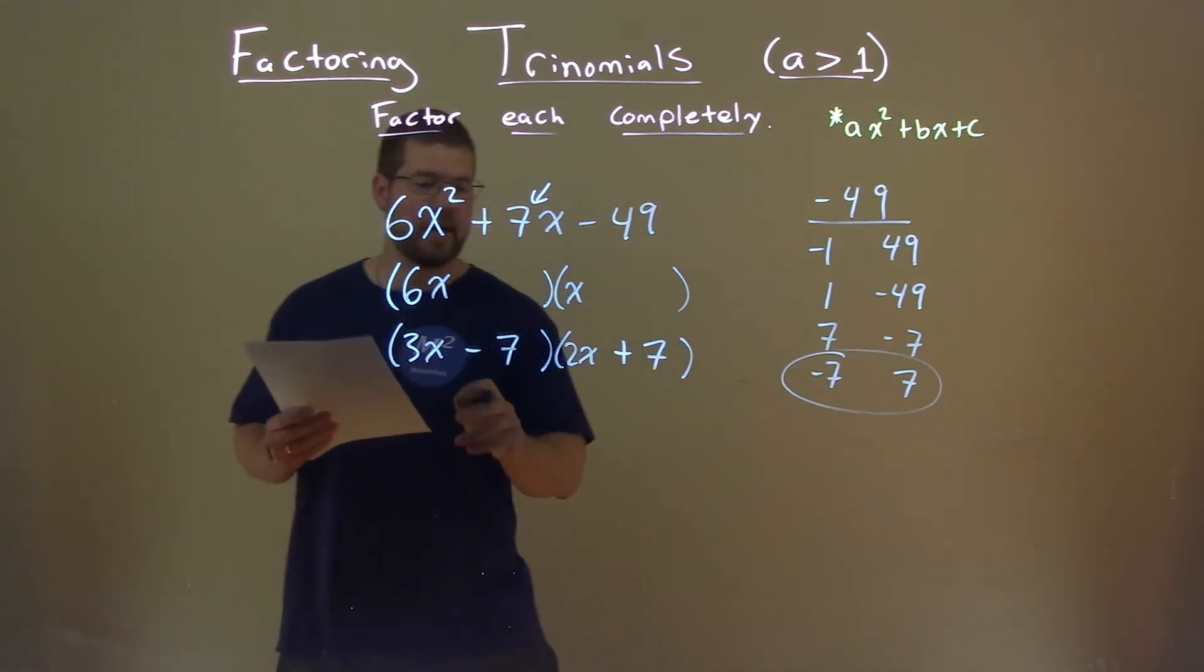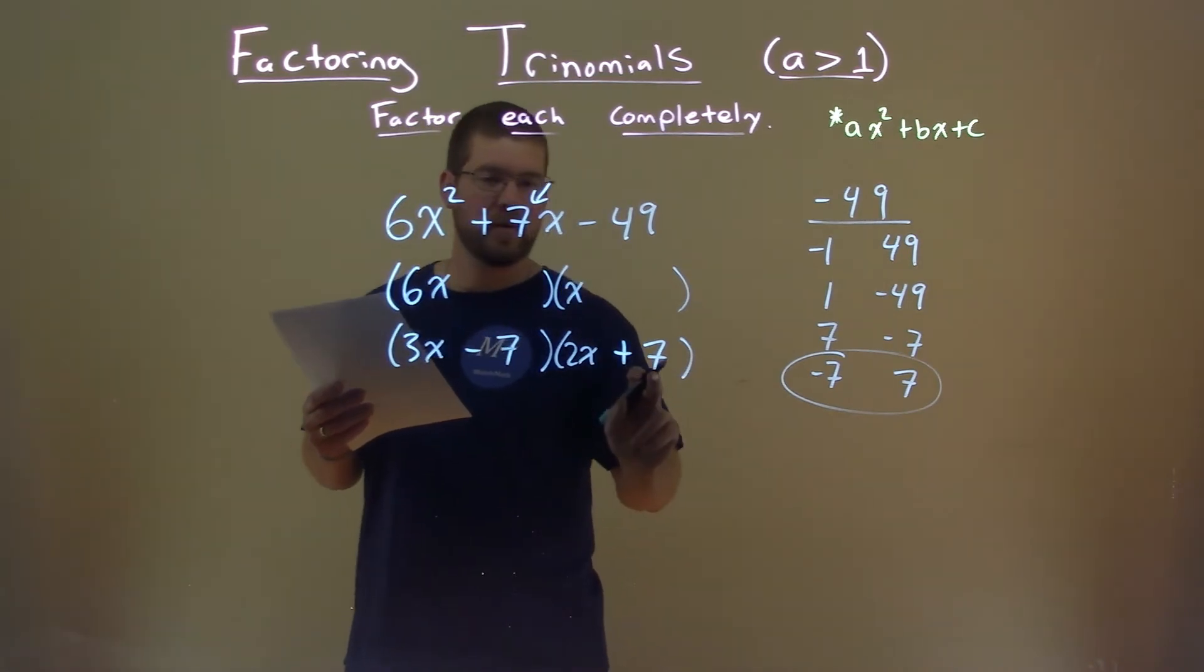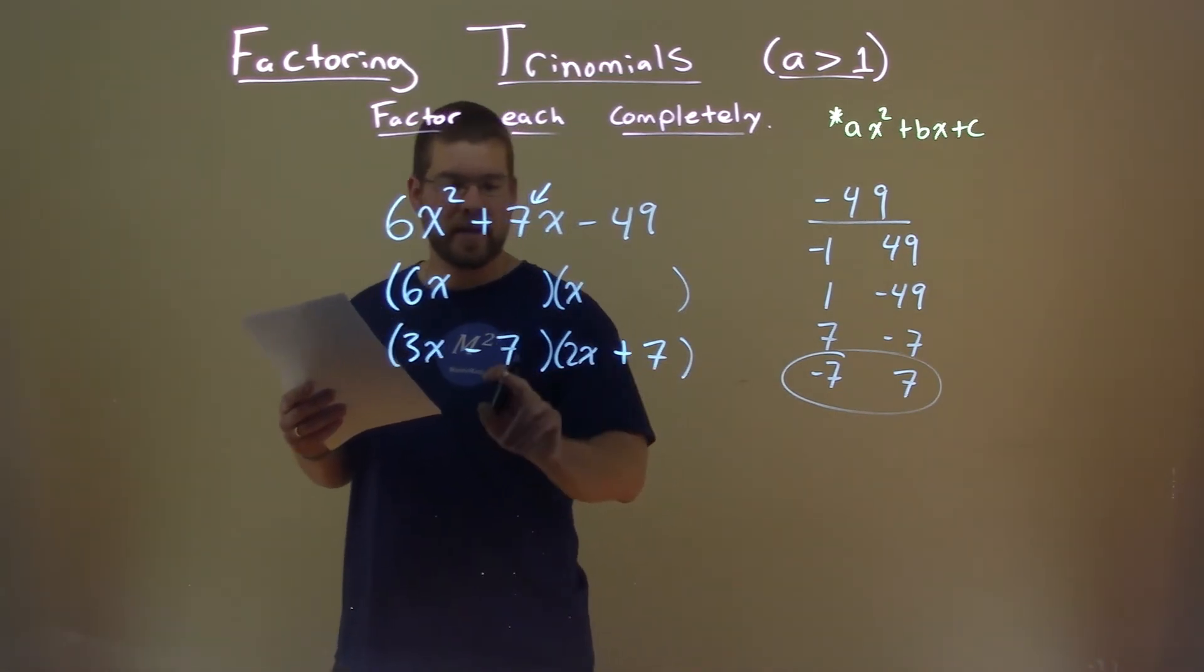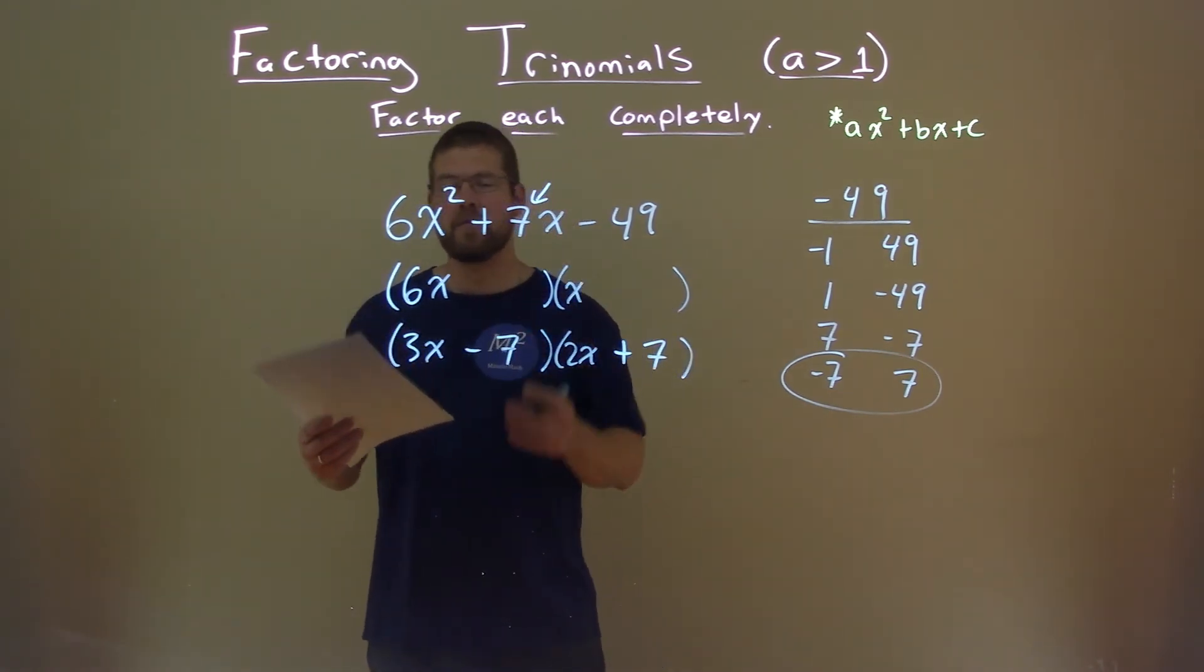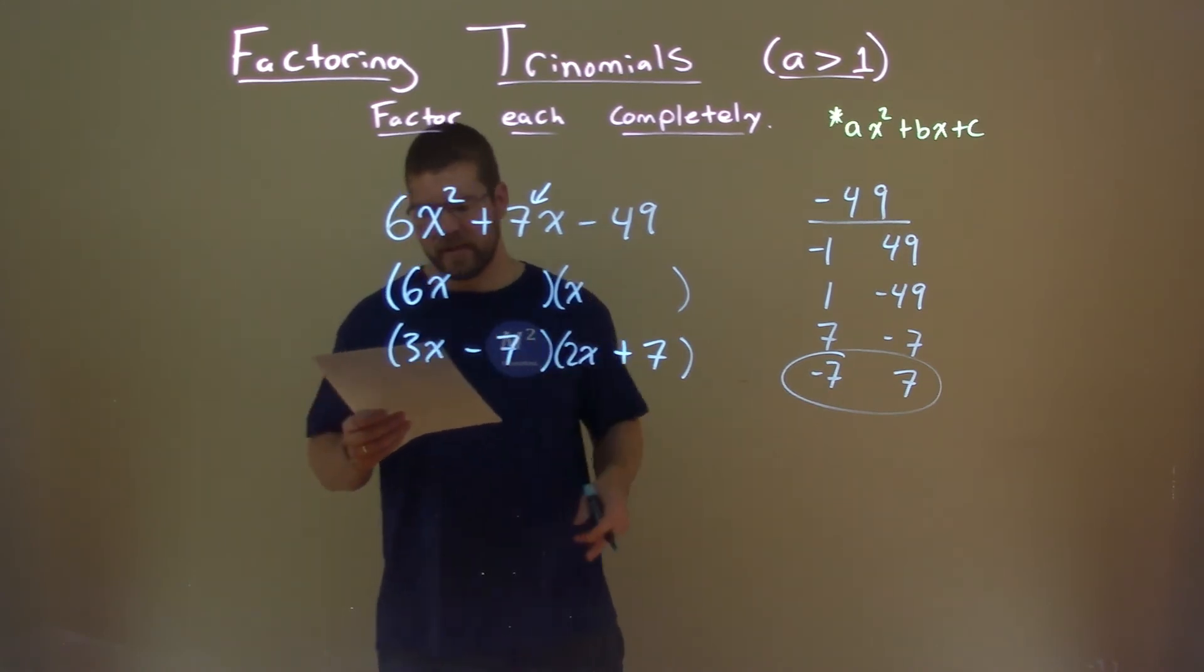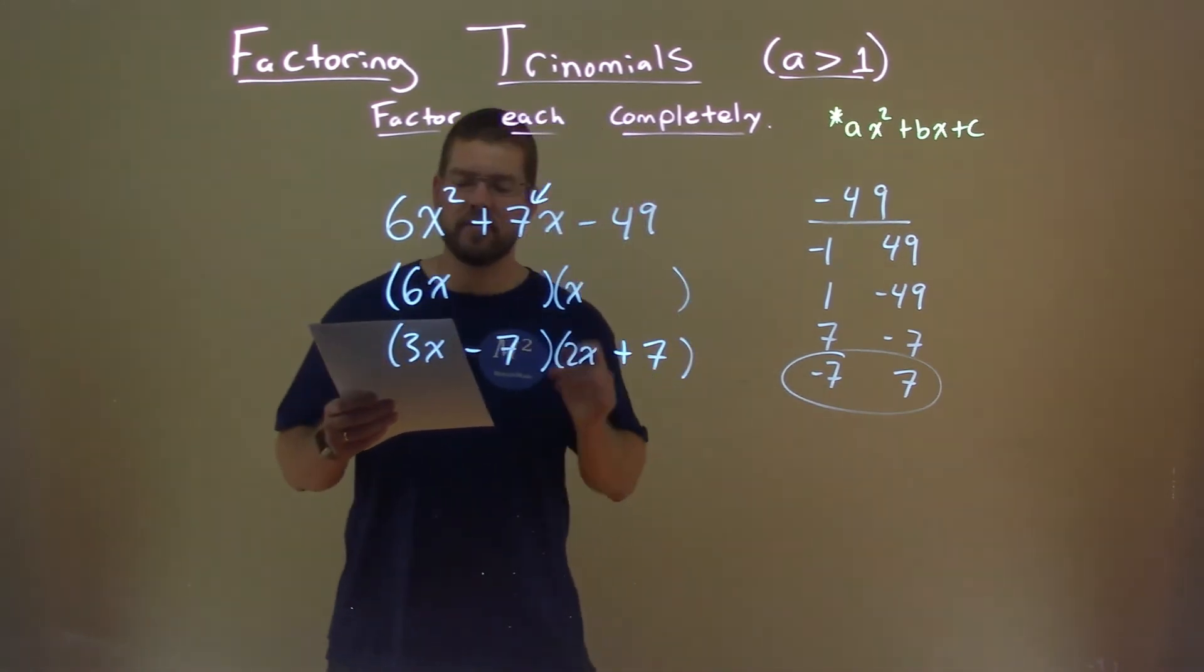And we can see that we multiply it out again. 3x times 7 is 21x. Negative 7 times 2x is negative 14x. We add those together, and we get positive 7x. So here we have our final answer: 3x minus 7 times 2x plus 7.